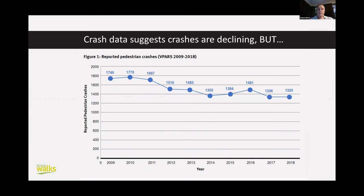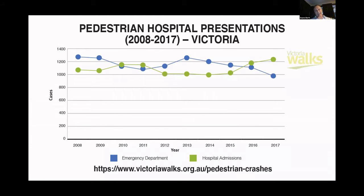In terms of what the crash data is telling us — this is the police-sourced data, the sort of data that appears in the road toll, managed by the Department of Transport and to a lesser extent TAC — what that data shows for pedestrians is a decline in pedestrian crashes between 2010 and 2014, before they started to plateau and we essentially got a stagnation in crashes. But that's just the police reported data, and the hospital data tells us a slightly different picture.